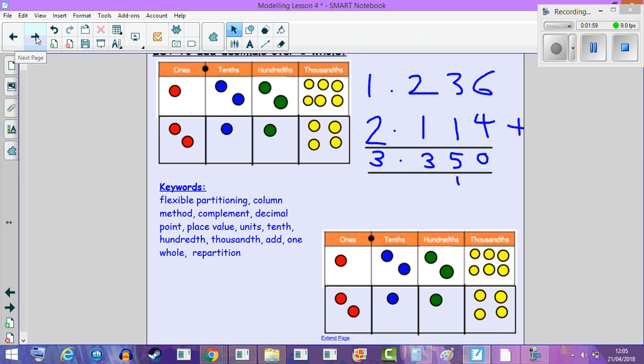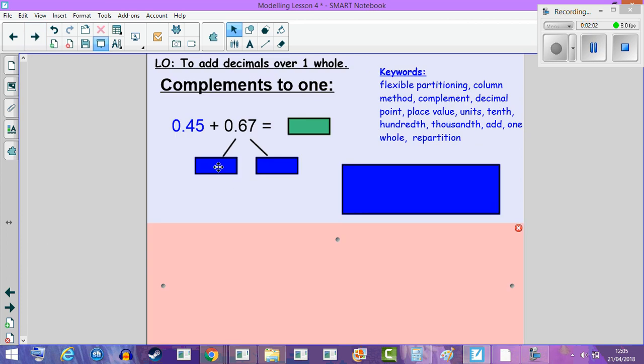The next question we have is dealing with addition through flexible partitioning. We have 0.45 and 0.67. Here we are going to use complements to one whole to add, and then whatever is left over becomes our decimal number. So here we have 0.45. We partition the second decimal, but the trick is we need to make sure that when we choose the partition, both these numbers add together to make one whole.